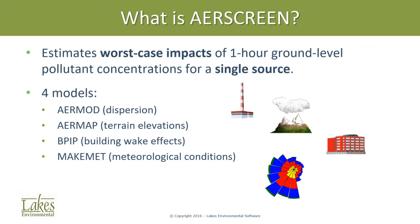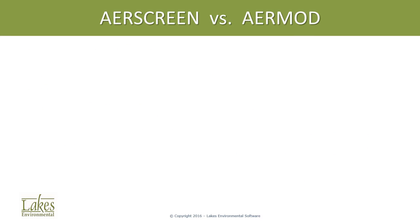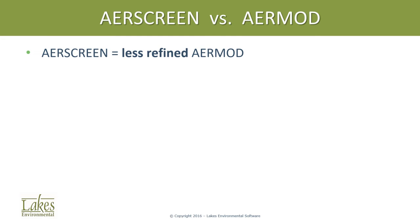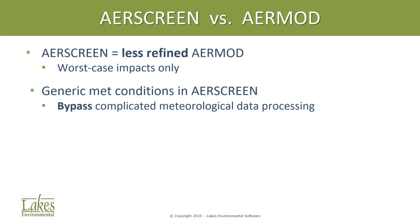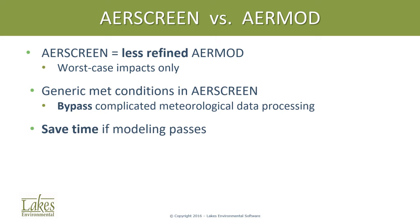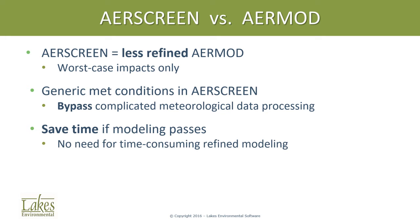You may be asking yourself, how is AirScreen different from AirMod if it runs the AirMod executable? Well, AirScreen is like a less refined AirMod run that only estimates worst-case impacts. Also, AirScreen uses generic meteorology conditions, so you bypass complicated MetData processing. With screening modeling, you can save time because there's no need for time-consuming refined modeling when worst-case concentrations pass regulatory thresholds.